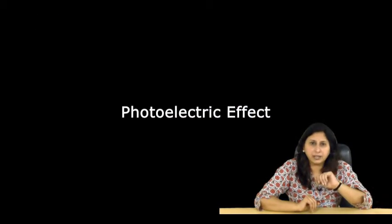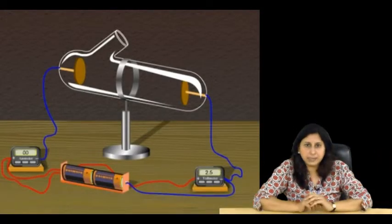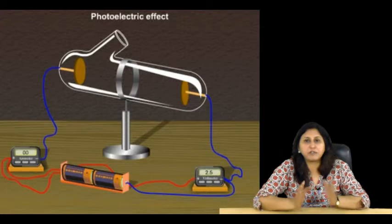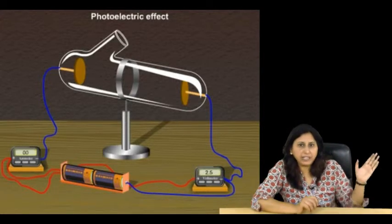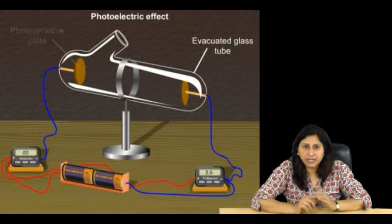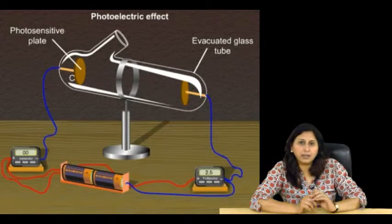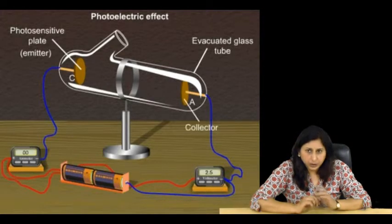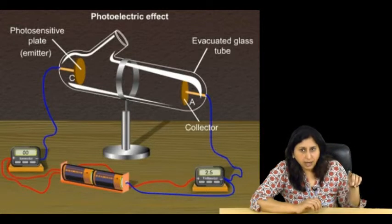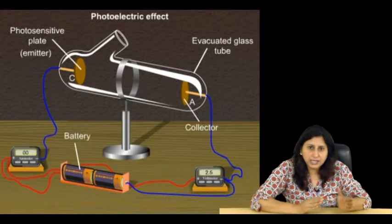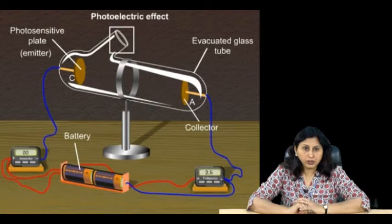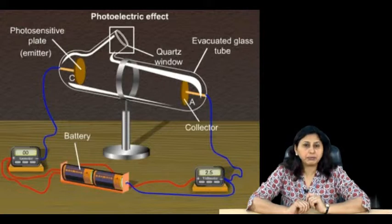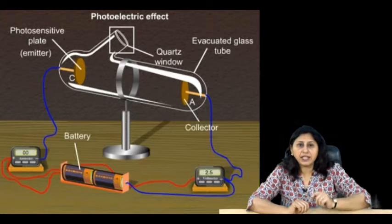Photoelectric effect. Now this setup here on the screen is meant for an experimental study of the photoelectric effect. Now you all have the basic know-how of the photoelectric effect. So as you can see, we have an evacuated glass tube, which has a photosensitive plate. Let me label it as C. This is known as the emitter. Now there is another metal plate, A, known as the collector. You can see that the emitter and the collector are attached to a battery, which maintains a potential difference between the plates. You can also see a small window that opens up into the glass tube. It is a transparent quartz window that permits UV radiations to pass through it and irradiate the emitter.